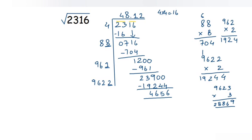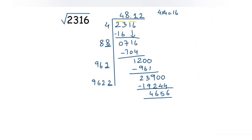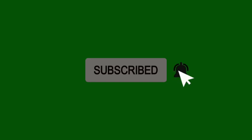So the square root of 2316 is approximately 48.12. It's quite an easy method, but it is lengthy — you have to do a lot of trial and error to find the new digit each time. The method itself is very simple. I hope you understood. Thank you so much for watching. If you like my channel, please subscribe and click the bell icon.